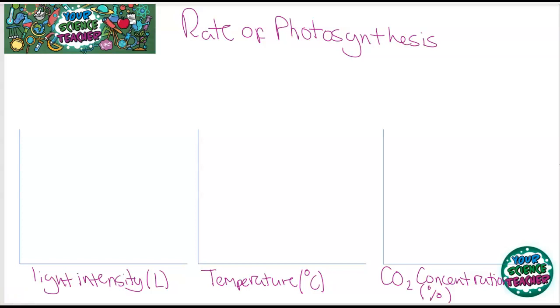However, if either the light intensity, the temperature, or carbon dioxide concentration is controlled, these can limit the amount of photosynthesis that can occur. That's why these are all known as limiting factors, because they control the amount of photosynthesis that can occur.